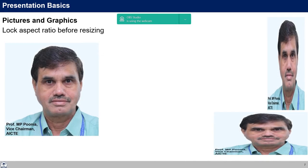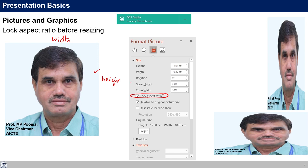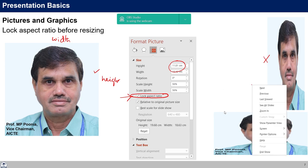One important thing: when using pictures or graphics, we must lock the aspect ratio before resizing. The aspect ratio is the ratio of width to height and should remain constant. When you format a picture and lock the aspect ratio, changing the height or width will keep the ratio intact. On the right-hand side you can see examples where the aspect ratio was not locked — one image is stretched vertically and another is stretched horizontally.